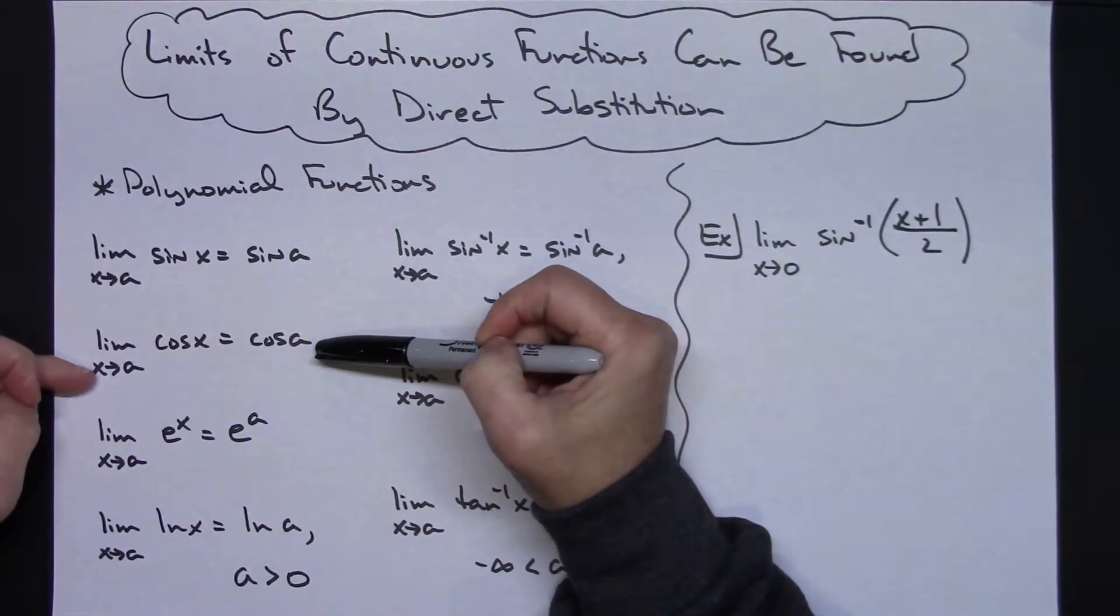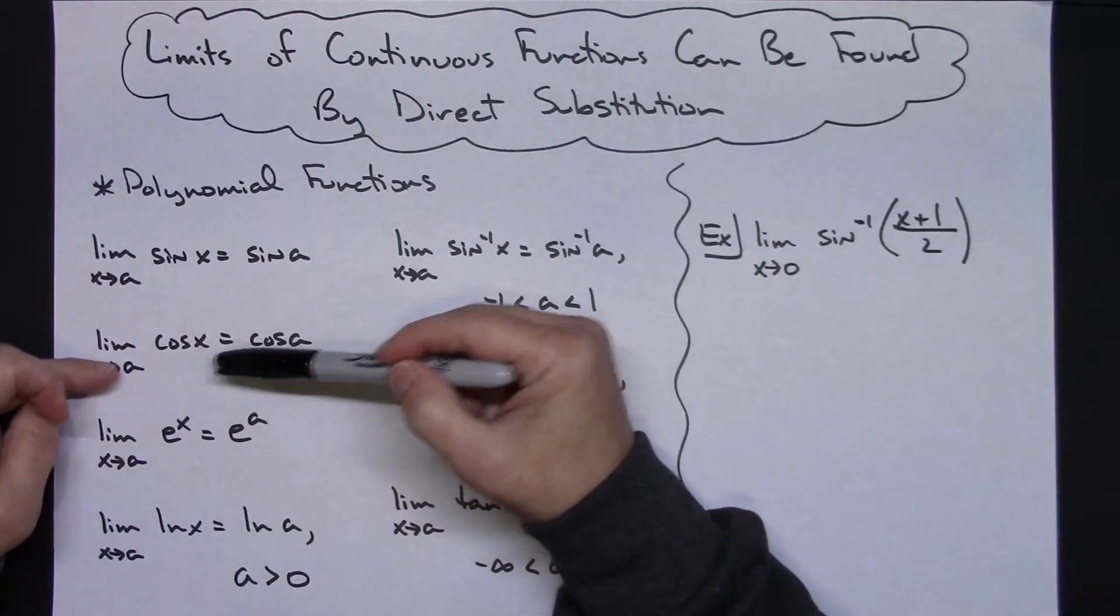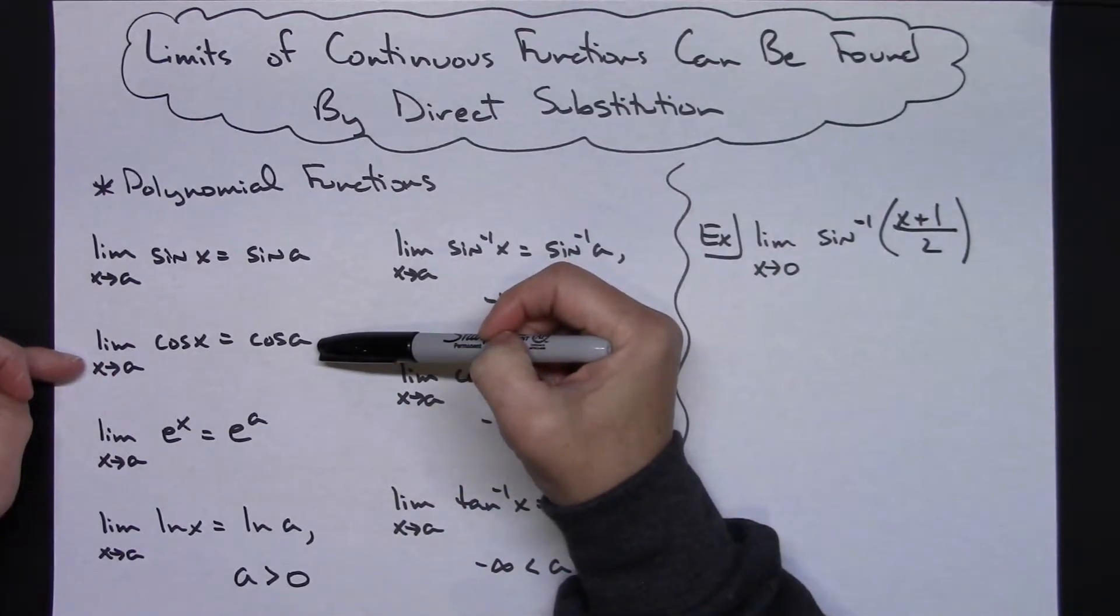Same thing with cosine. Cosine is a continuous function, so again, a direct substitution is going to help you find that limit very easily.